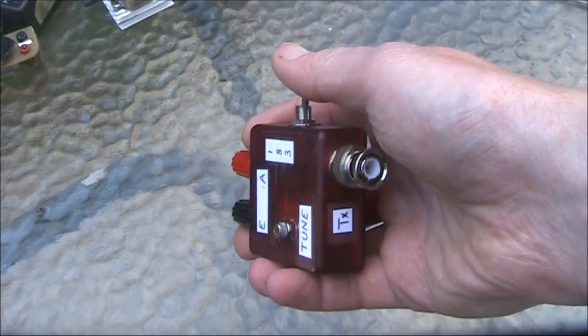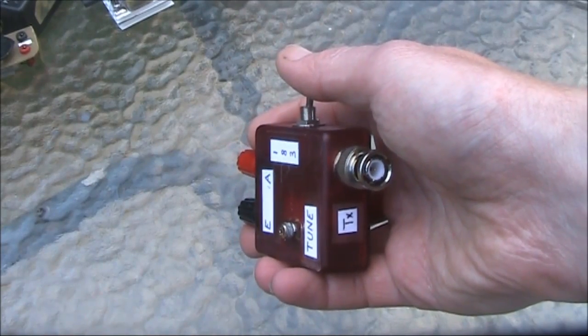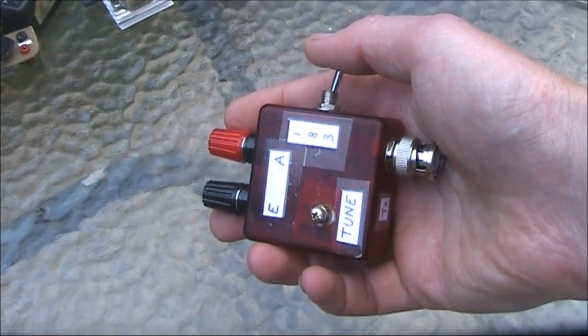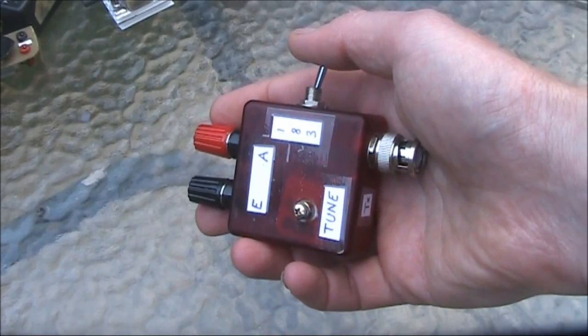Another feature is the use of a panel mount male BNC that allows the coupler to be connected straight to the transceiver without an intermediate cable.